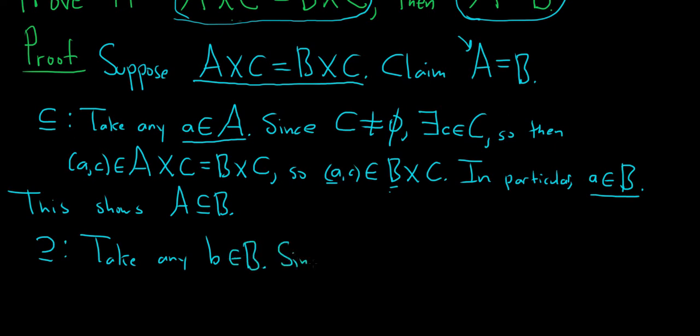And then again, since C is non-empty, there exists some little c in capital C. Then we can look at b comma c. That's an element in the Cartesian product B cross C, which equals A cross C.